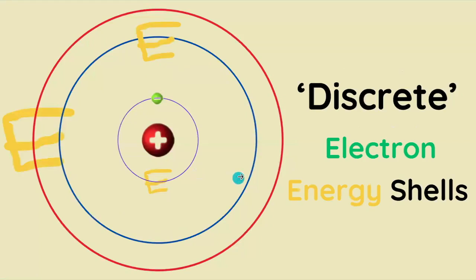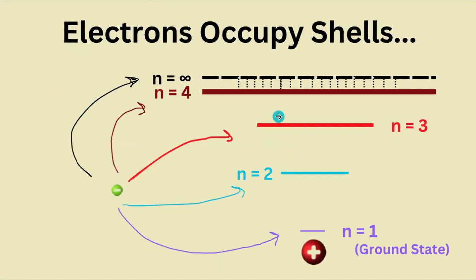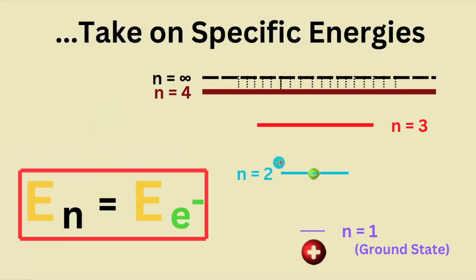Our atom has a series of rings called shells, which house electrons and have a certain amount of energy associated with them. Electrons can't just be anywhere within the atom — only at, and never between, shells. Here, n represents the energy shell, and our electron can potentially occupy any one of these shells, taking on however much energy is associated with that shell.